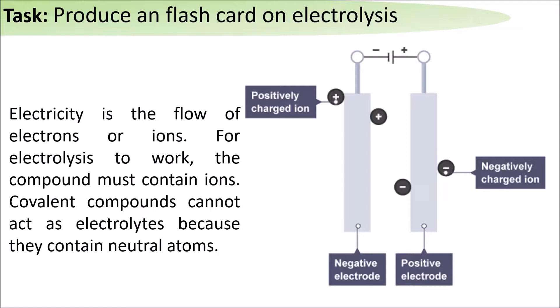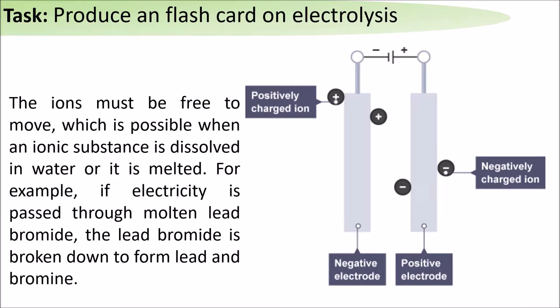Covalent compounds cannot act as electrolytes because they contain neutral atoms. The ions must be free to move, which is possible when an ionic substance is dissolved in water or is melted.